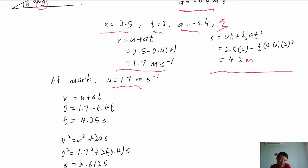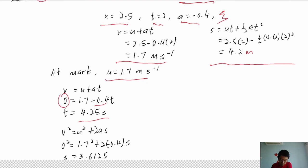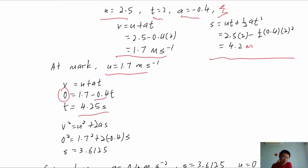For the second stage, from the mark to the highest point: initial velocity at the mark is 1.7 m/s, final velocity V = 0, and acceleration is still −0.4 m/s². We find the time taken from mark to highest point and the distance from mark to highest point using the available kinematic information.